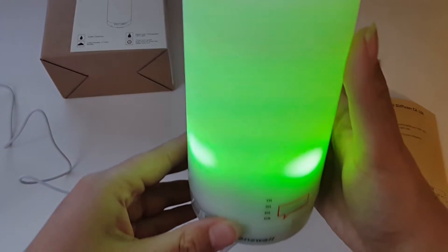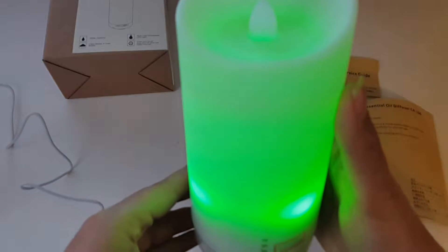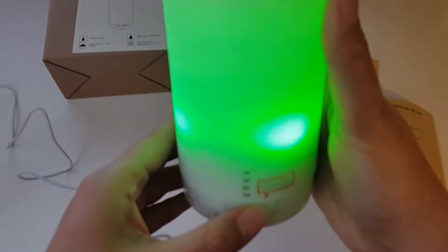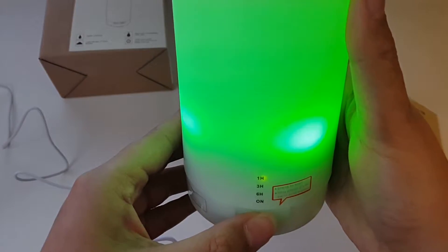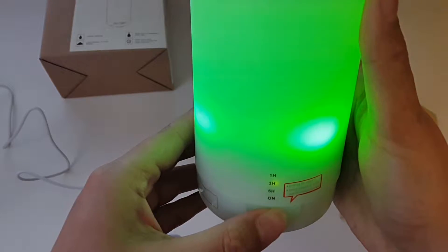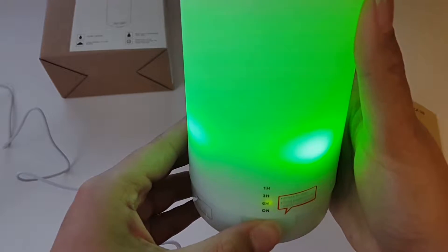So now I've kept it on green. And here are the timers—there's the on button, one hour, three hour, six hour mode. So I'm just going to leave it on for the hour.